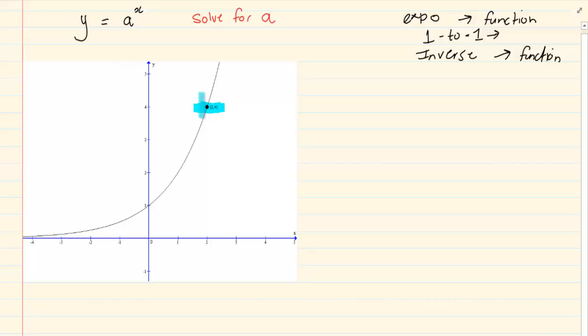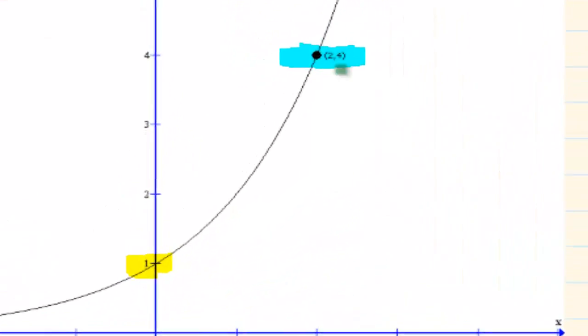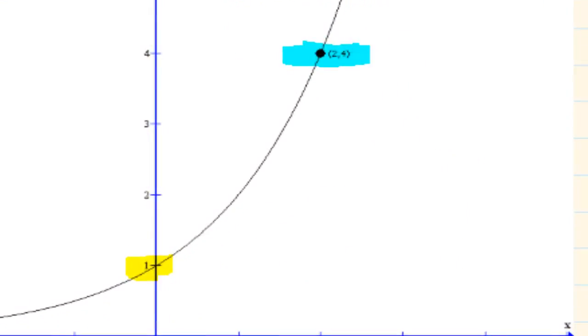Now if you already have a coordinate, all you have to do is you need to substitute in x and y the relevant information. You are not going to choose the 0 and 1. You are going to choose any other remaining coordinate given. So I would have y is equal to a to the power of x. I have that y is equal to 4 and a to the power of x, x is equal to 2.